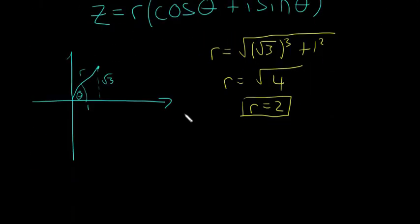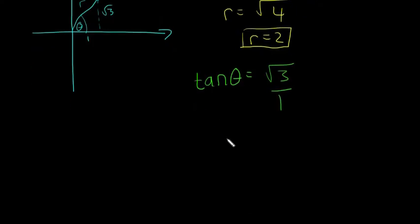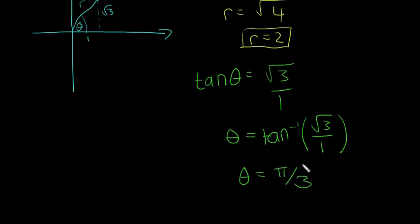Now we need to find the argument or the angle theta. So to do this, we're going to say that tan of theta equals the opposite over the adjacent, which is going to be the square root of 3 over 1. So then to find our angle theta, we say that theta equals the inverse tan of the square root of 3, and theta is going to equal pi over 3.